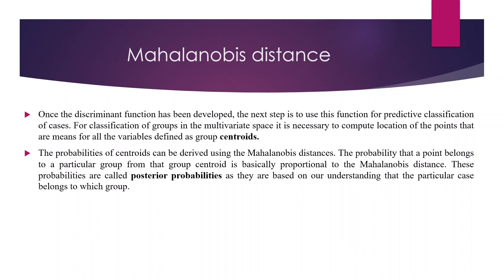The next statistic generated is the Mahalanobis distance. For classification of groups in multivariate space it is necessary to compute the location of points. The means for all variables, identified as group centroids, are calculated. The distance of any new point from the centroid represents its probability of belonging to a particular group — this is proportional to the Mahalanobis distance. These are called posterior probabilities, as they are based on our understanding of which group a case belongs to. There are two types: prior probabilities, where no model has been assigned to the data, and posterior probabilities, where the model has been assigned and comparisons are made.